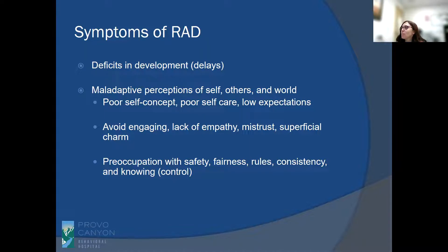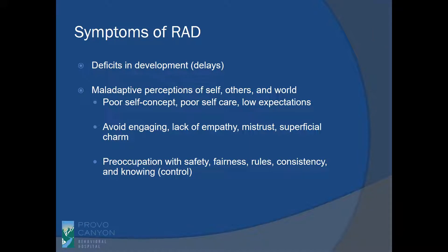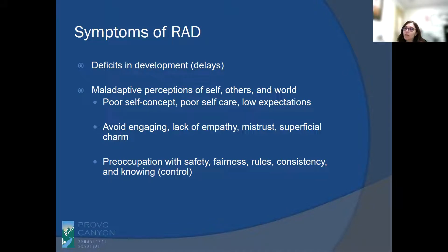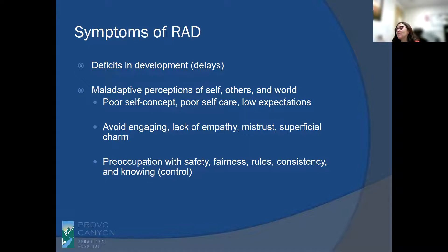We've got to help those kids understand there is another way of experiencing the world — that the world is a safe place, adults are safe, adults can be trusted, and adults can help those kids meet their needs. We see poor self-concept, low self-esteem, poor self-care, low expectations about themselves. They are not very engaged in social interactions, their confidence is not very high, and they're going to be the kid just waiting for others to do things.